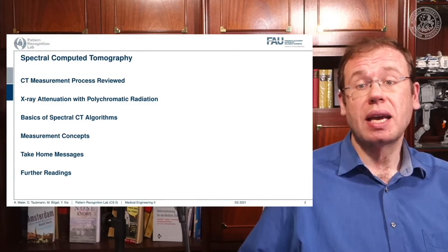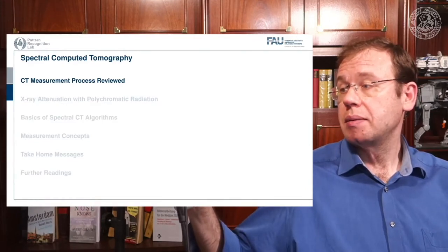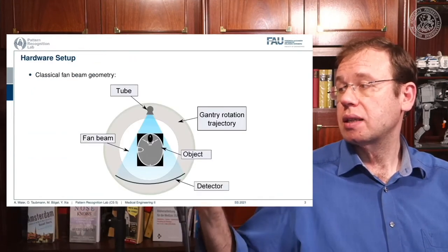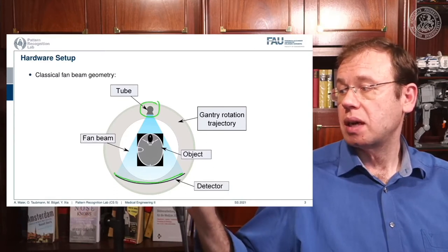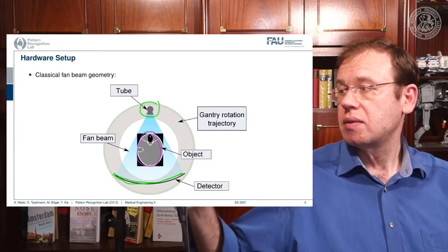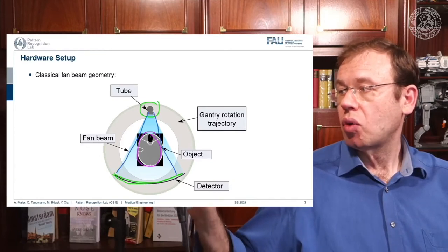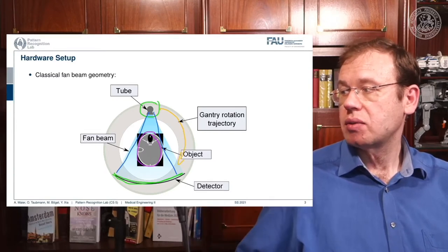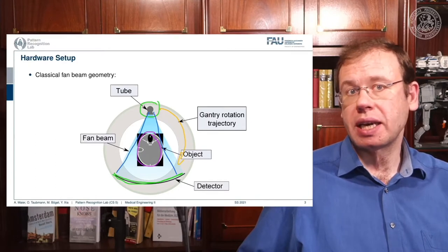Let's review the CT measurement process. What we typically have is a CT gantry: a tube, a banana-shaped detector, and the object in the center. We acquire a fan-beam type of image and rotate in order to get the entire reconstruction done.